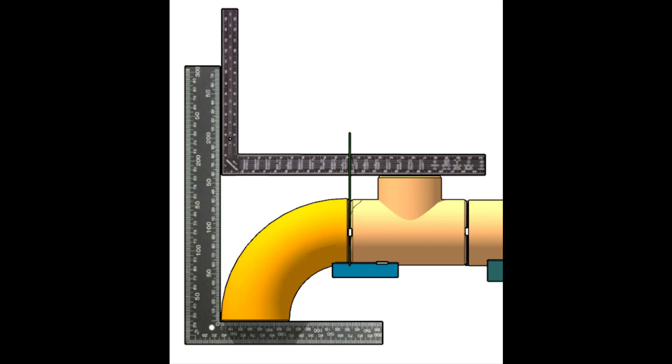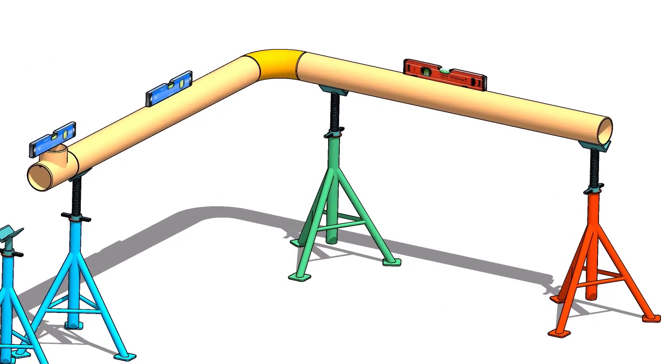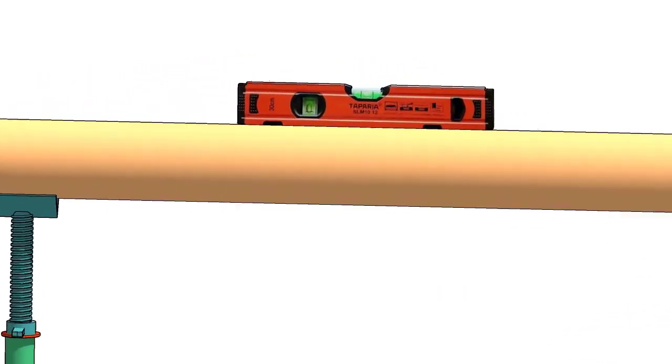In the first method, we will fit up a 90-degree elbow to a fixed tee. First thing to do is to make sure the already fabricated spool's dimension and level are acceptable.